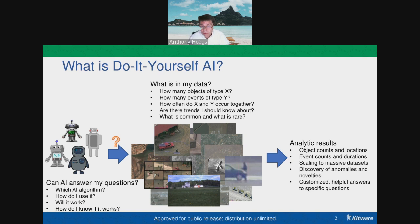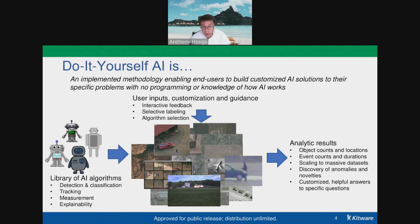We haven't solved all of these problems — I'm not claiming that. But we have tools that might be able to help across a pretty usable range of problems. Do-it-yourself AI, as we see it, is a way for end users to build customized AI solutions to very specific problems — because many analysts have very specific problems — without any programming or any knowledge of how the underlying algorithm operates. You don't need to be an AI expert, and you don't need to be scripting things or programming in Python.